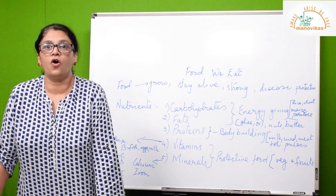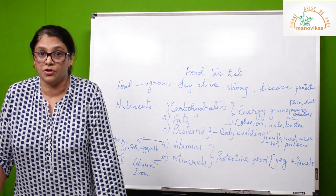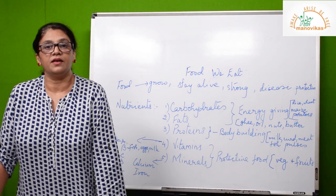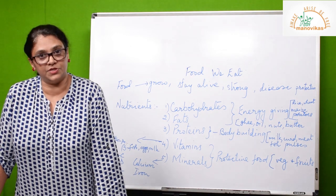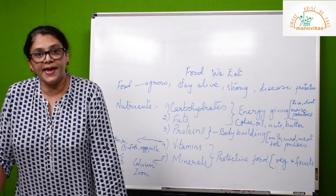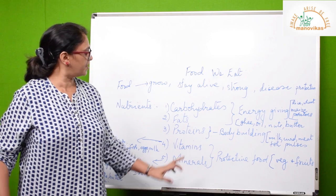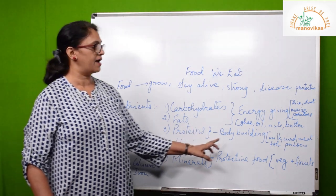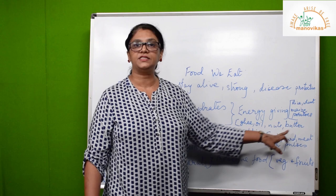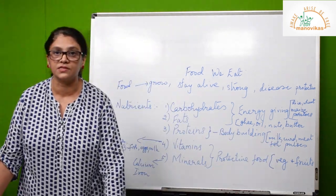Next we come to proteins. Proteins are a nutrient required for building our body, so growing children need a lot of proteins. It builds muscle and repairs the cells in the body. Foods rich in proteins are milk, curds, meat, and fish.